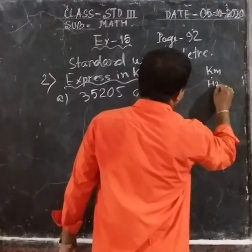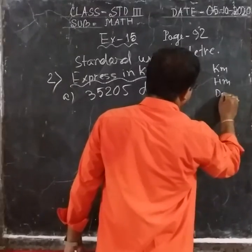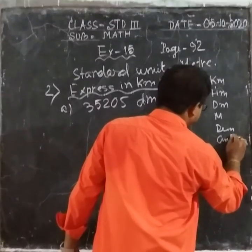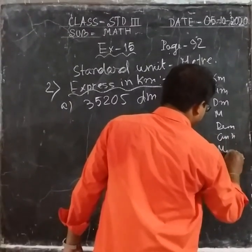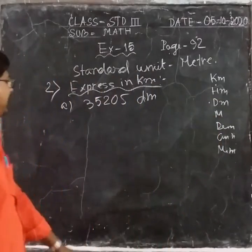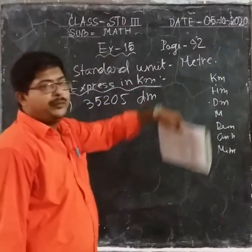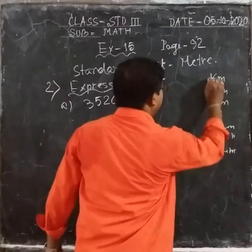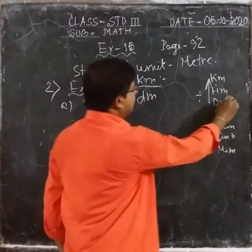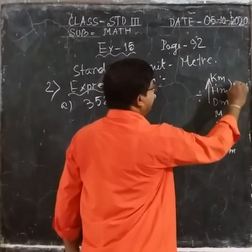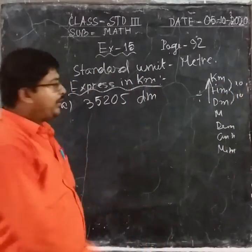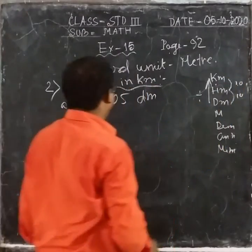The table is: Kilometer, Hectometer, Dekameter, Meter, Decimeter, Centimeter, and Millimeter. From Dekameter to Kilometer, that means going from down to up, you have to divide. Divide by what? By 10. Each place has a difference of 10, so you multiply or divide by 10, 100, and so on.